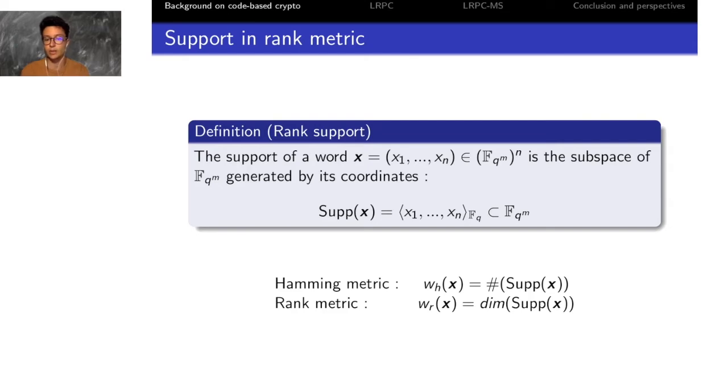We can also define similarly the notion of support of a word in rank metric, which is the subspace generated by all the FQ linear combinations of the coordinates.